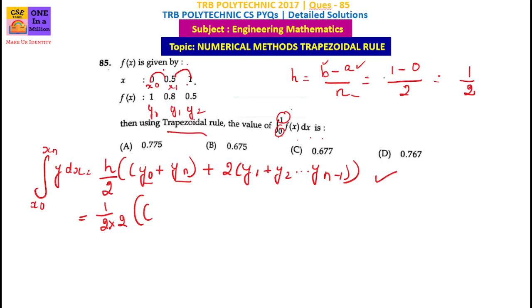This is x0, x1, x2. So y0 is 1, y2 is 0.5, plus 2 into the remaining term, y1 is 0.8.